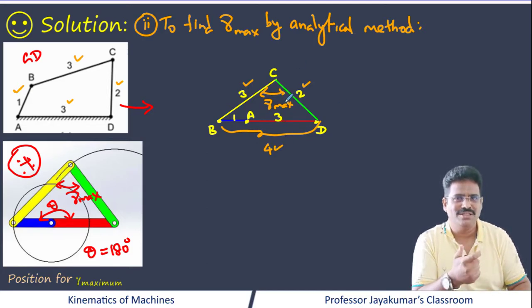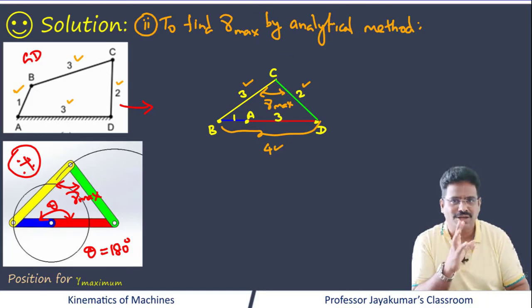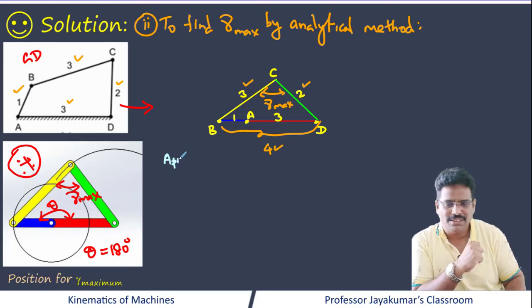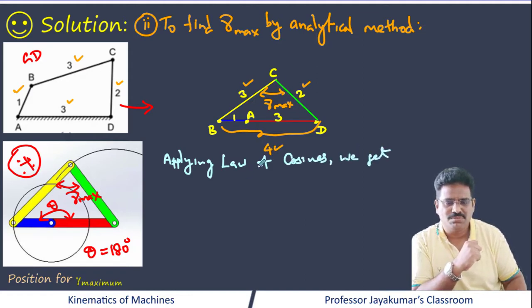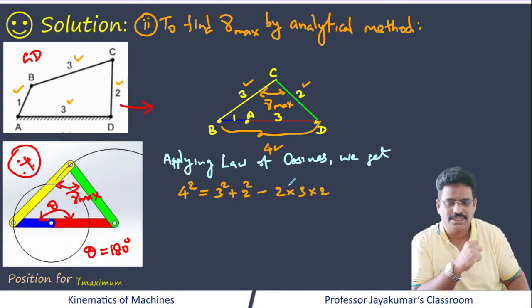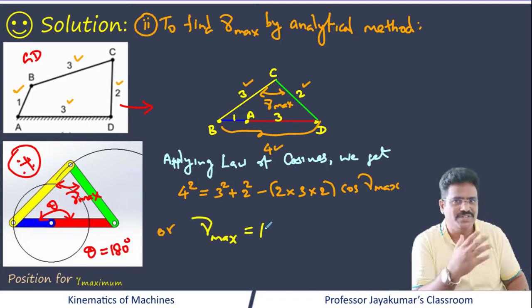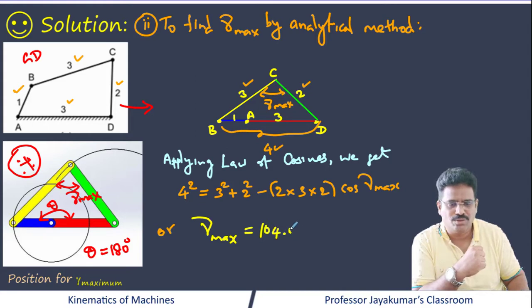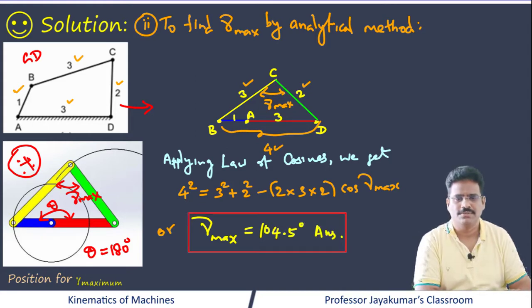Now I know 3 sides of the triangle and need to find one included angle — we use the law of cosines again. Applying it: 4² = 3² + 2² − 2×3×2×cos(gamma max). On simplification, I am getting the value of gamma max as 104.5 degrees. This is the answer.